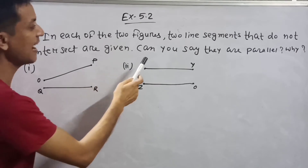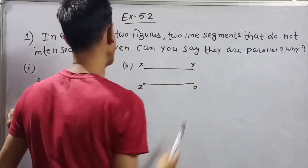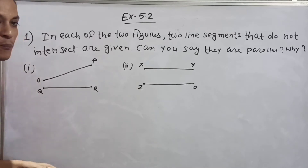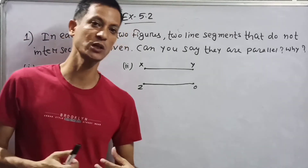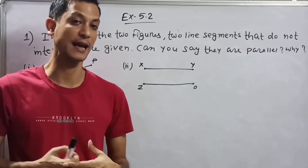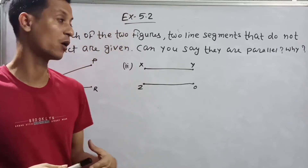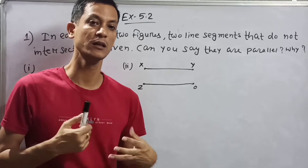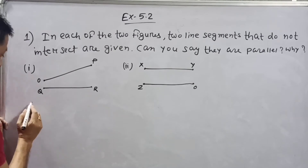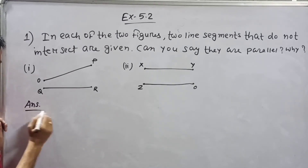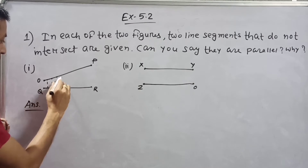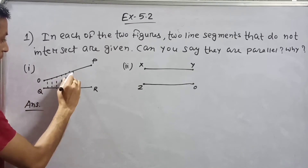Here you can see two line segments, number one and number two. We know that when two lines do not intersect each other, they are parallel lines. Also, the distance between two parallel lines or line segments is constant — that means equal. For number one, they do not intersect each other, but the distance between these two line segments is not constant — it is not equal.